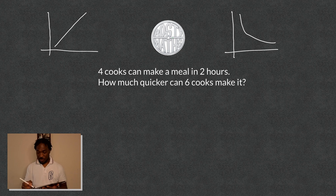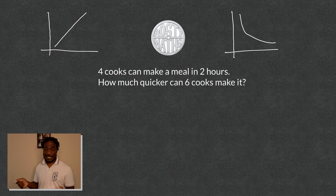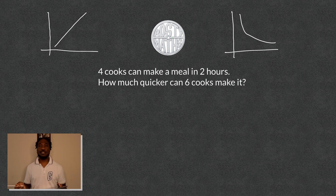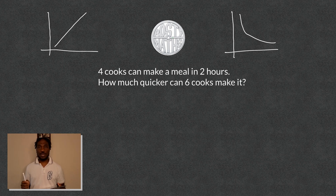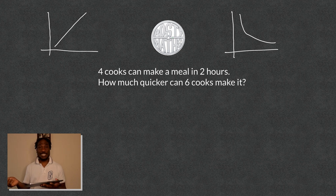Let's jump straight into solving this question. It says four cooks can make a meal in two hours. How much quicker then can six cooks make that same meal?